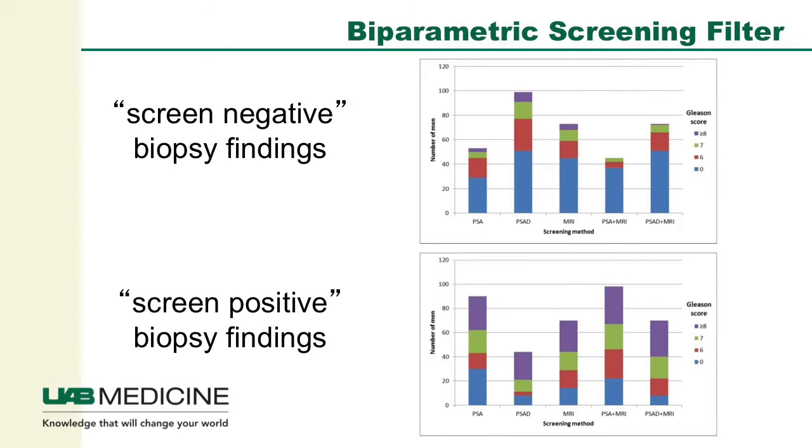Thinking of this as a screening filter after a digital rectal exam and PSA, which is currently the accepted paradigm, demonstrated that incorporation of this biparametric MRI can identify a significant portion of high-grade cancers when screened positive without identifying patients who would not have cancer detected on these biopsies. Alternatively, incorporating the biparametric MRI in screen-negative patients demonstrated essentially missing no high-grade cancers if biopsies were actually eliminated from the scheme.